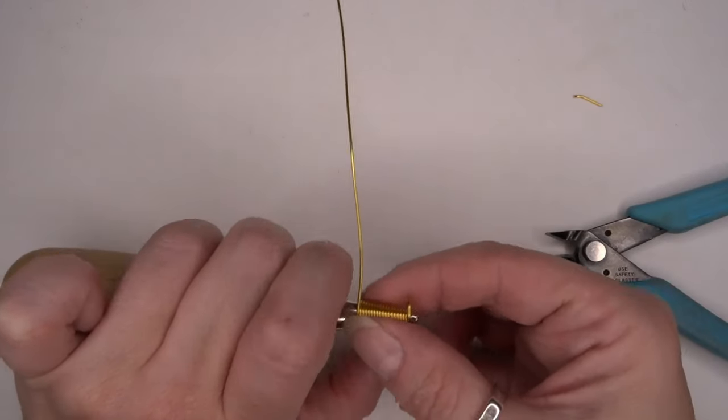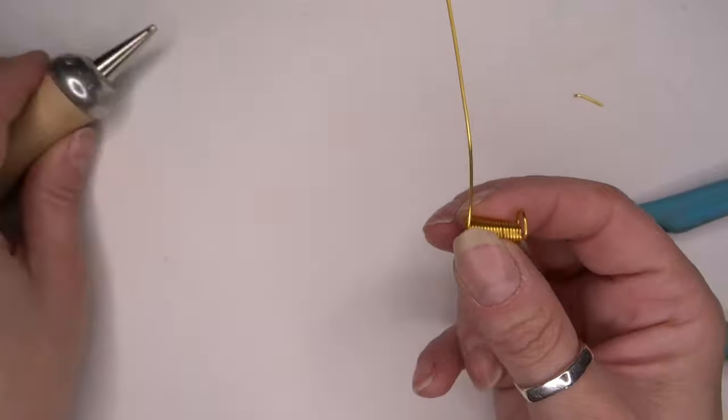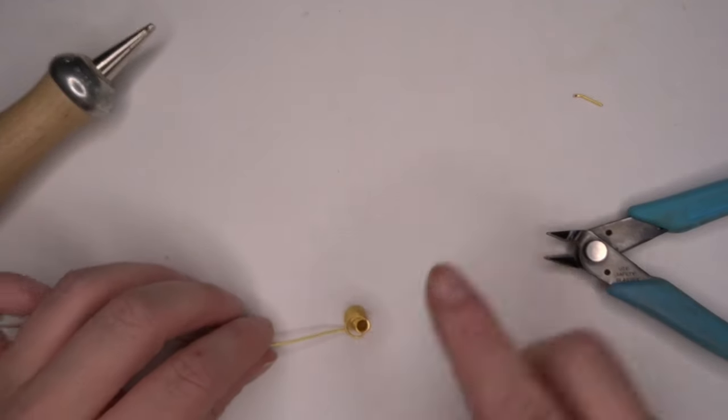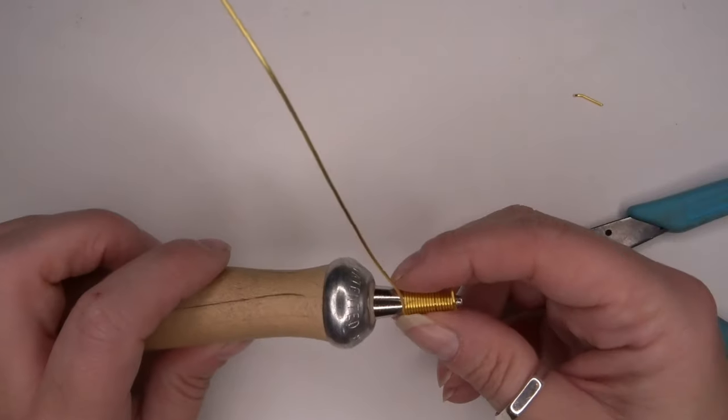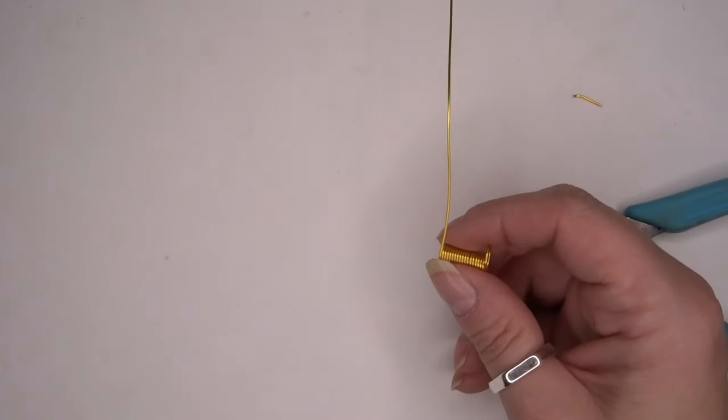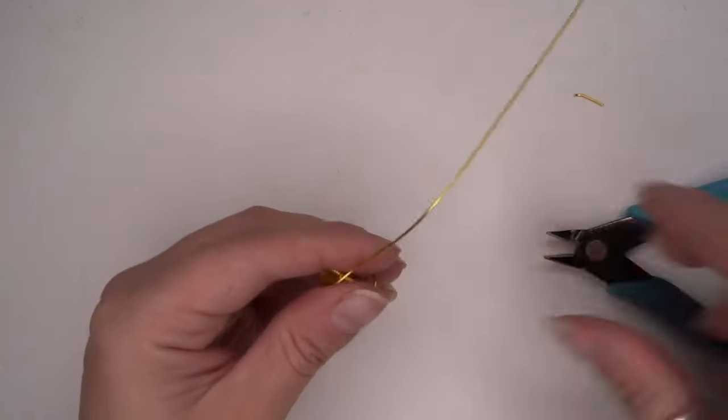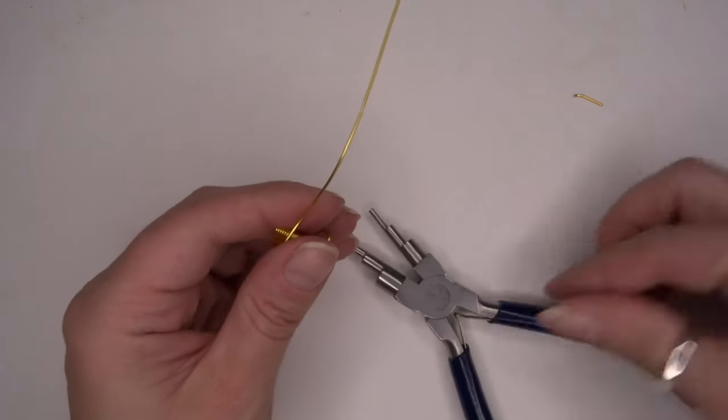We'll keep the wax comb close because we need to kind of mold the loops on the end. For our loops, I'm going to be using our six-step bail-making pliers.